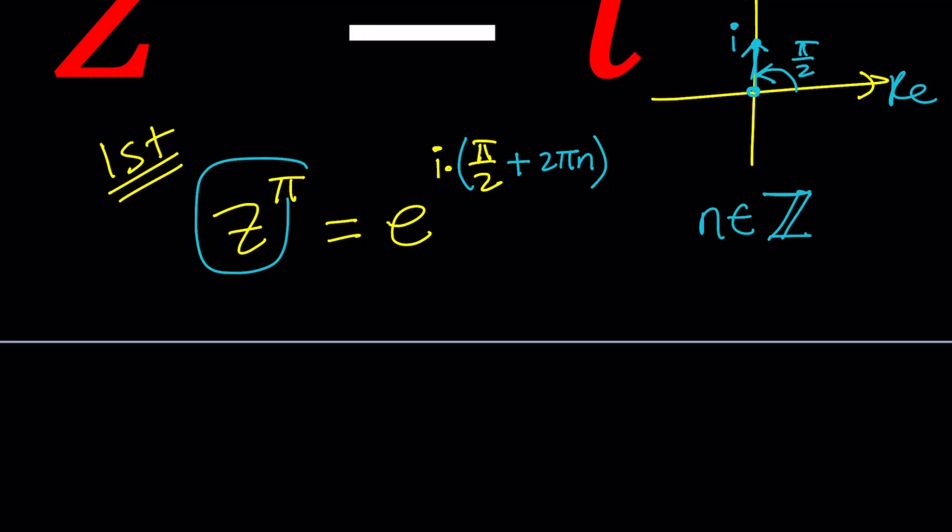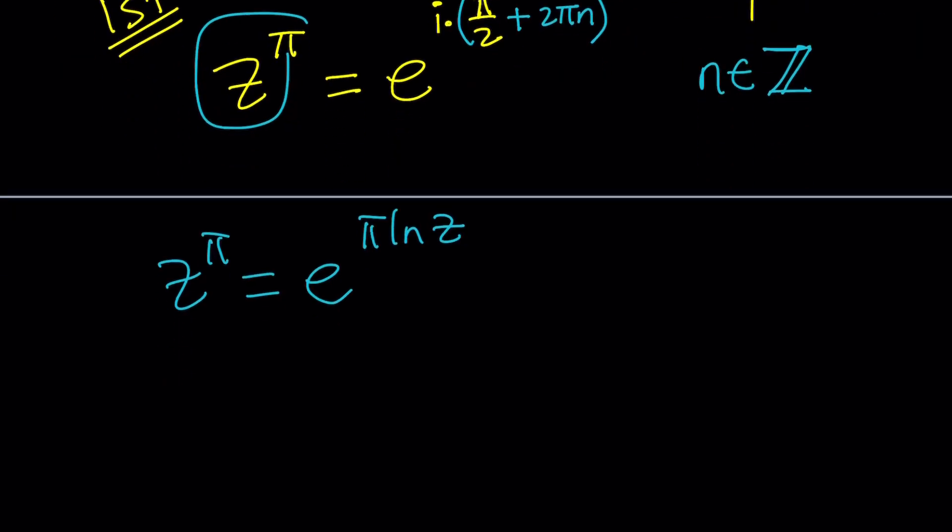Remember that z to the π can be written as e to the power π ln z. Because any complex number z to the w can be written as e to the power w ln z by definition. That's the definition for the complex exponentiation. That's how it's defined.